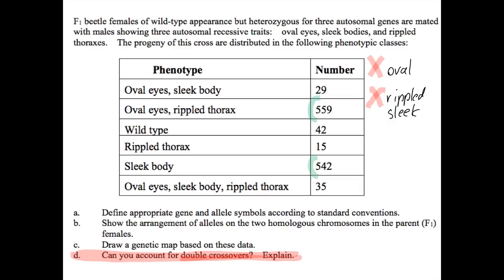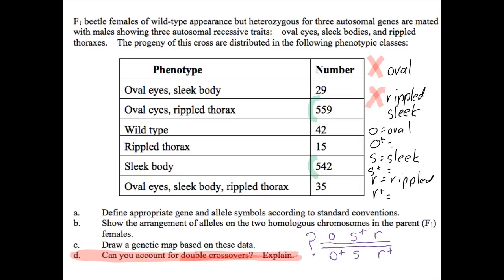So your next step to figure out the gene order is to make gene symbols and then propose a possible order. Down here we've got S in the middle, and we'll see if that works. Notice that the genotype here fits with one of the phenotypes that's really large — we've got oval eyes and rippled thorax. Here we've got no mention of the shape of the eyes or thorax, but we have a sleek body. That's how we come up with this. All of the permutations for the double crossover will reflect either parental group.